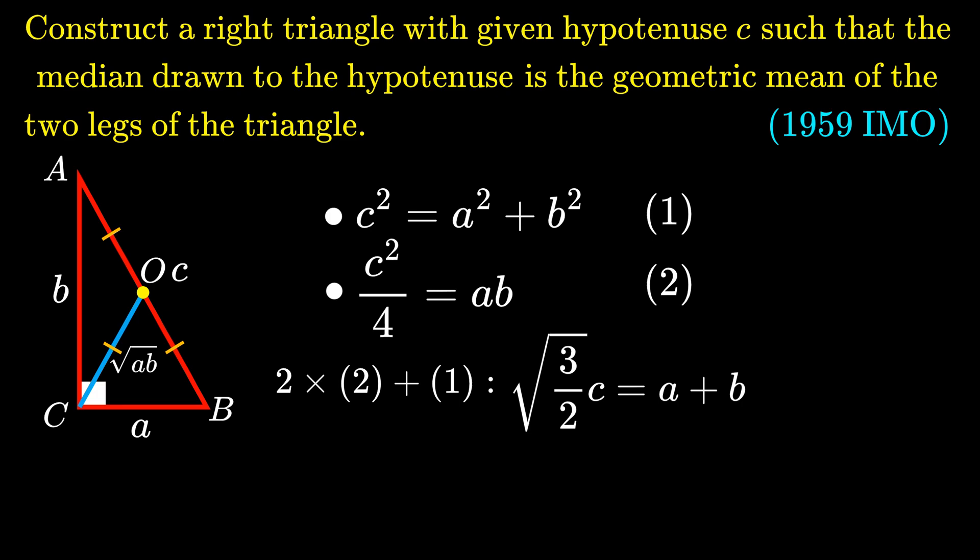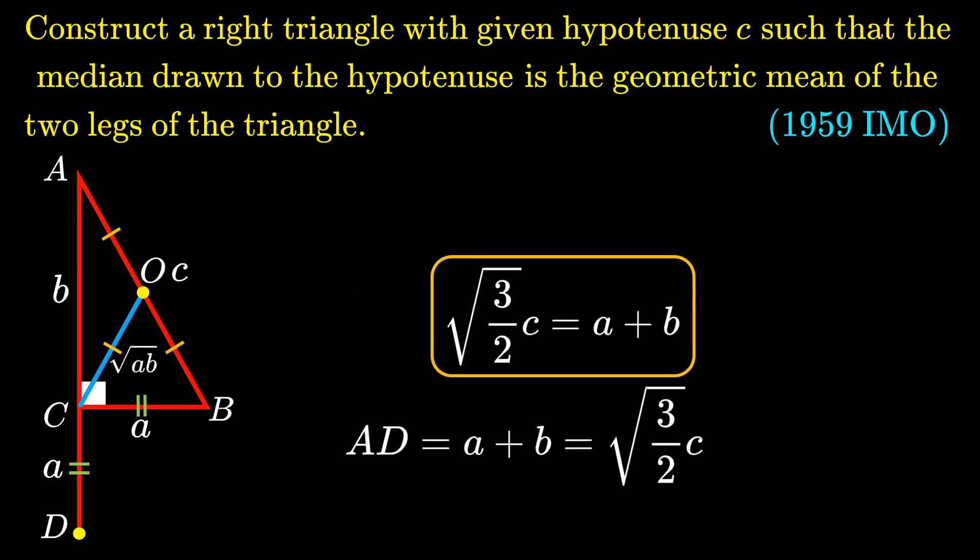So if we were to construct triangle ABC, it needs to fulfill this condition. Seeing the quantity A + B, we can come up with this length if we let D be the point on the extension of line AC such that the lengths BC and CD are the same. We see that the length AD is just A + B, which is √(3/2) · C.